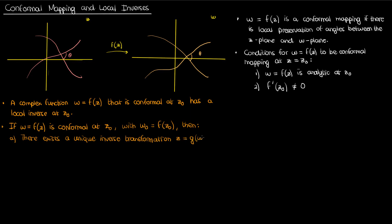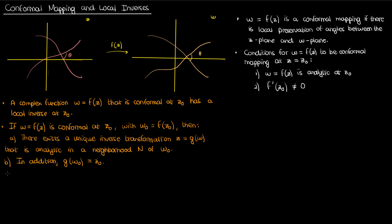I can write this inverse transformation as z equals g of w, where this g of w is defined and analytic in a neighborhood of w-naught. At w-naught, g of w maps back to z-naught. So just like how f of z maps me from z-naught to w-naught, g of w does the opposite and maps me back from w-naught to z-naught. That's why it's an inverse transformation.